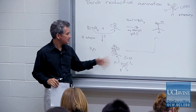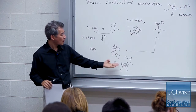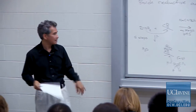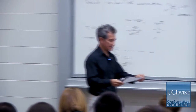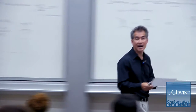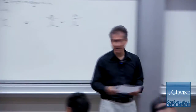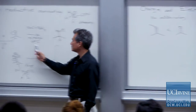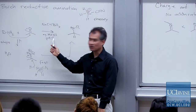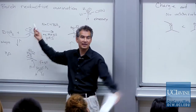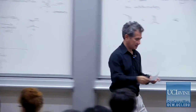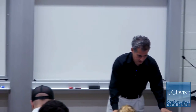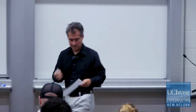Cyanoborohydride only reduces things that have positive charge — like carbocations or iminium ions. If you dump in too much acid — say, hydrochloric acid — you'll start protonating the ketone and then your ketone will also reduce. So you have to carefully control the pH. Remember: iminium ions react faster. We'll use that again in just a little bit.